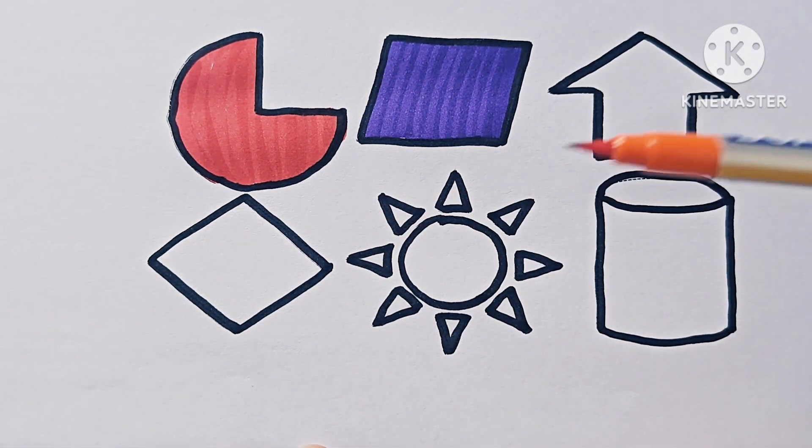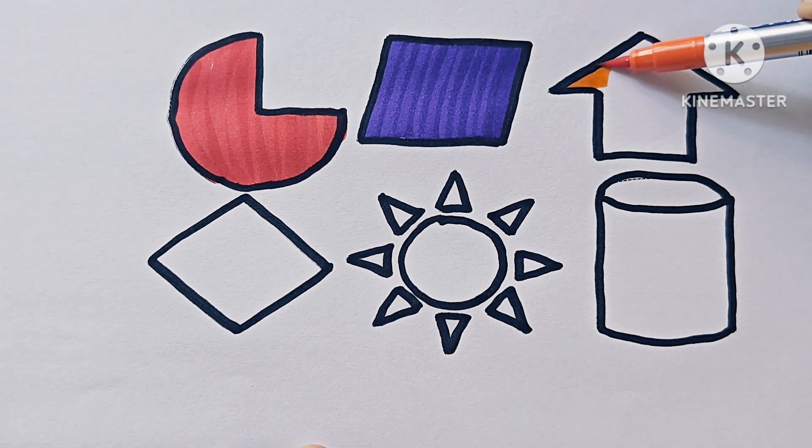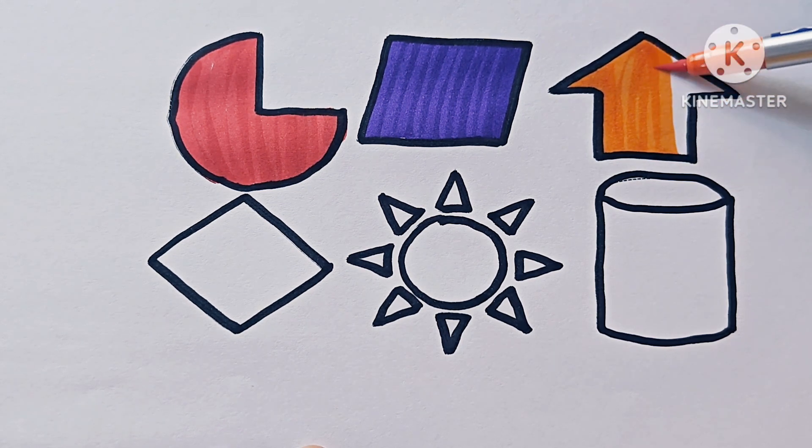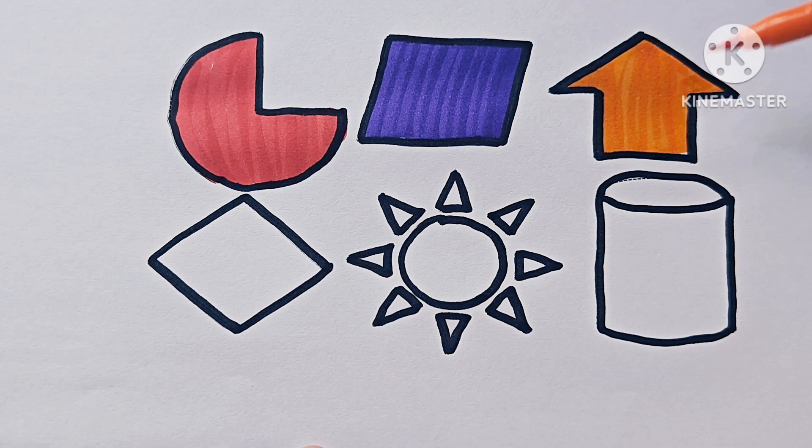This is orange color. This symbol is up arrow. Direction is up, upward direction, so this arrow is up arrow.